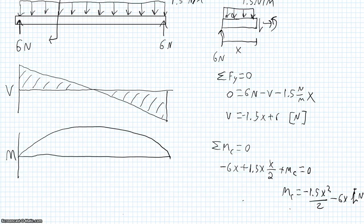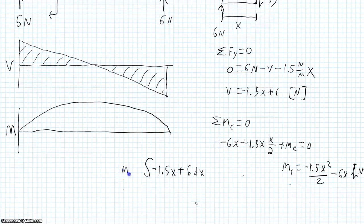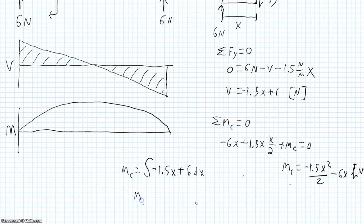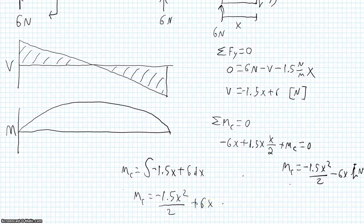So if we take the integral, the shear is negative 1.5x plus 6 dx. And we're looking at the moment at the cut.